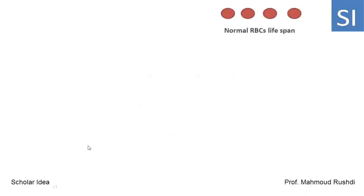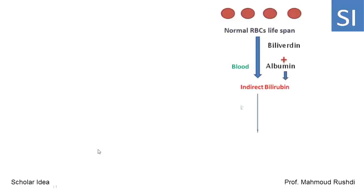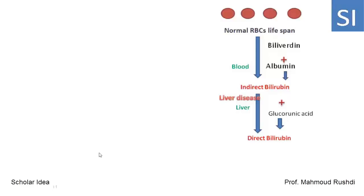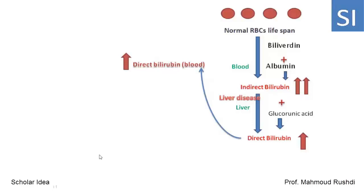Hepatic jaundice occurs in cases of liver disease. The lifespan of red blood cells is normal. Bilirubin is formed normally, combined with albumin, and transported as indirect bilirubin to the liver. Inside the liver, indirect bilirubin is conjugated with glucuronic acid, forming direct bilirubin. However, liver disease decreases the uptake of indirect bilirubin by the liver, resulting in increased indirect bilirubin in the blood. Additionally, direct bilirubin formed inside the hepatocytes returns to the blood circulation due to intrahepatic cholestasis.